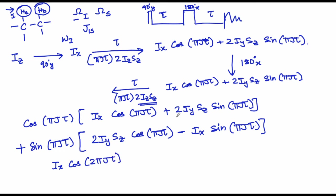Similarly, if you take the IySz component, you have something like 2IySz sin(2πJτ), because you have cos(πJτ)·sin(πJτ) + sin(πJτ)·cos(πJτ), which is 2 times sin(πJτ)cos(πJτ) — nothing but sin(2πJτ).